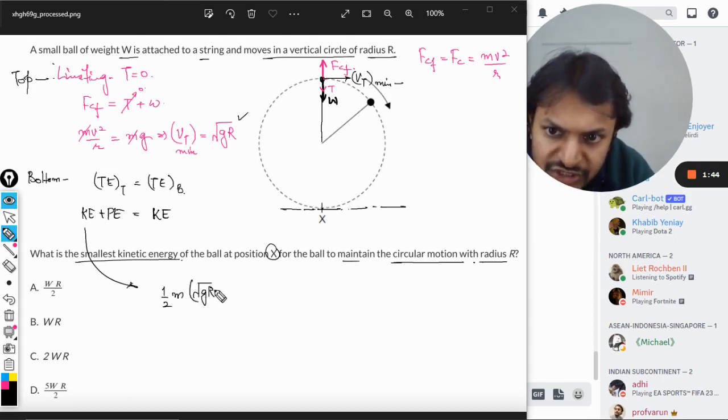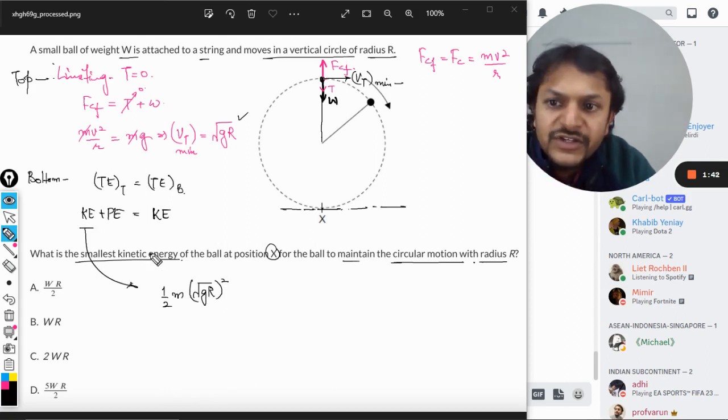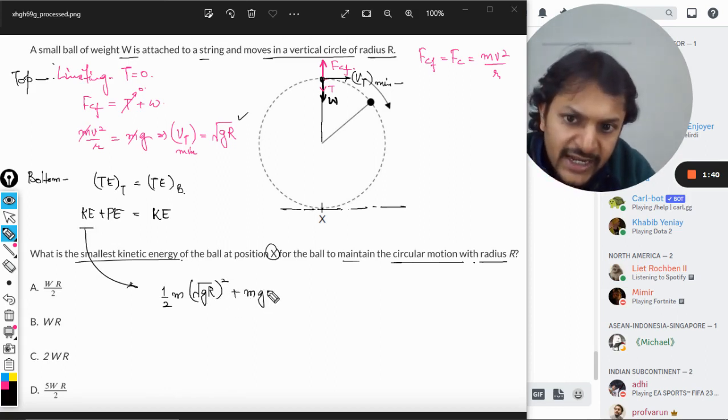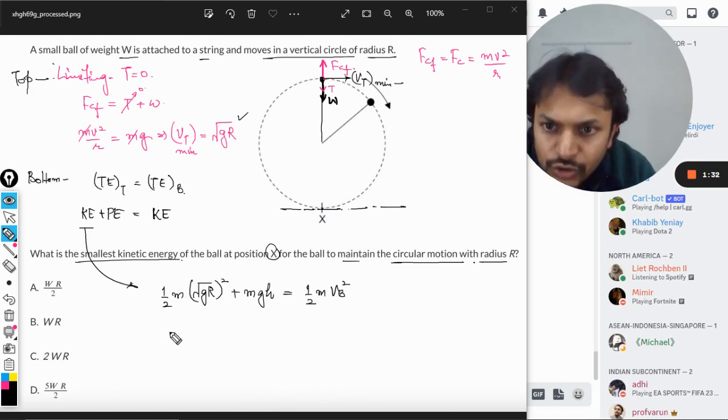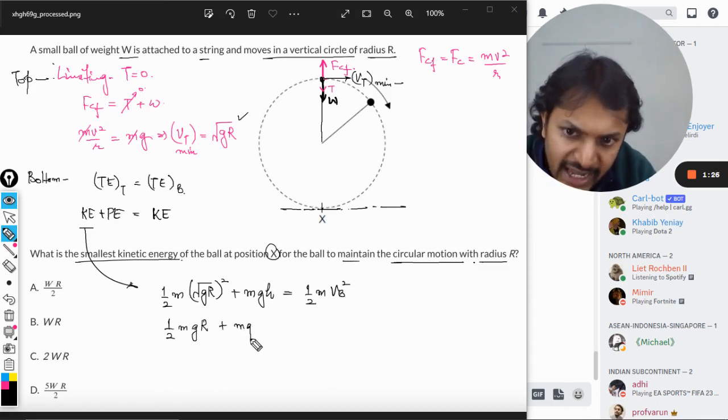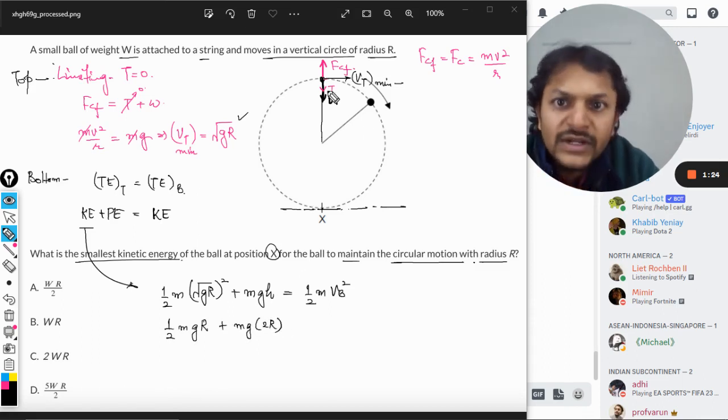At the top the velocity is root gr. Half mv square is the kinetic energy and the potential energy will be taken as mgh. At the bottom it will be half mvb square. This will become half mgr plus mg times height. Now what is the height of this body with respect to this datum? It is equal to 2r, that is the diameter.